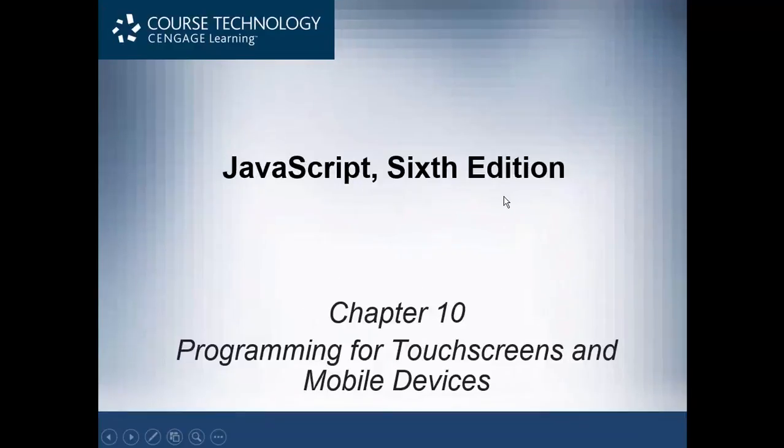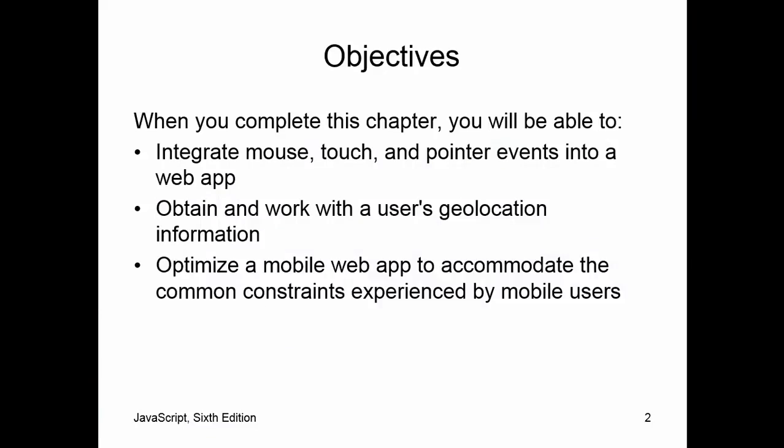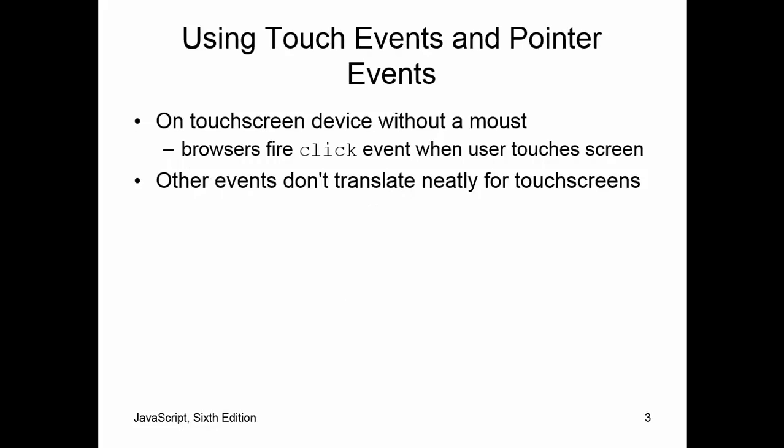Hello, Jeff Scott of Rankin Technical College. We've been going over the PowerPoint presentations for JavaScript, sixth edition by Course Technology, and we're up to chapter 10 of 12: Programming for Touchscreens and Mobile Devices. As of late 2015 to early 2016, more people now access the internet using mobile devices — typically defined as tablets and smartphones — than desktop and laptop computers. Our objectives are to integrate mouse, touch, and pointer events into a web app, obtain and work with geolocation information, and optimize a mobile web to accommodate common constraints experienced by mobile users.